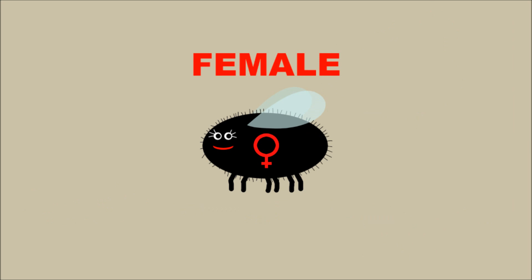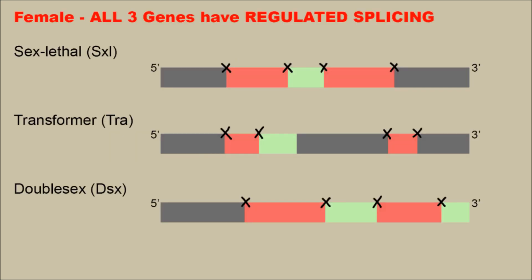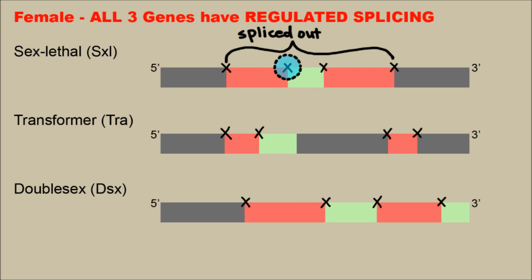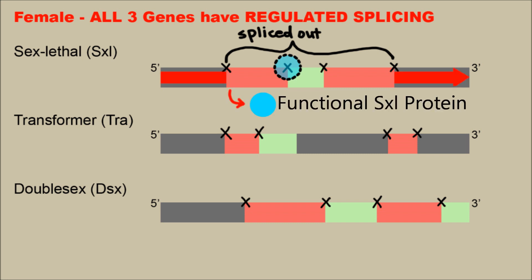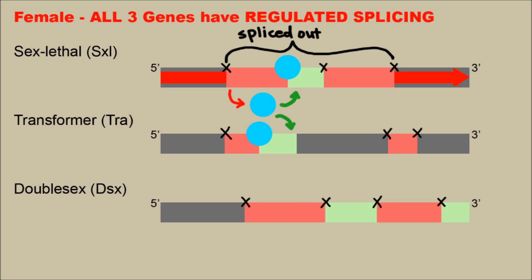How do female fruit flies come about? In females, all three genes have regulated splice sites. This regulation is triggered by the one-to-one ratio of X chromosomes to autosomes, which temporarily activates a promoter in the sex lethal gene, producing a special kind of sex lethal mRNA, which produces functional sex lethal protein. Now, the sex lethal protein is a splicing repressor — it binds the splice sites in the sex lethal mRNAs and activates them. As a result, this entire region gets spliced out. The ribosome then does its work, and we have a functional sex lethal protein. This sex lethal protein can go back and keep repressing sex lethal mRNA splice sites. It can also repress splice sites in transformer mRNAs, resulting in a functional transformer protein being produced.